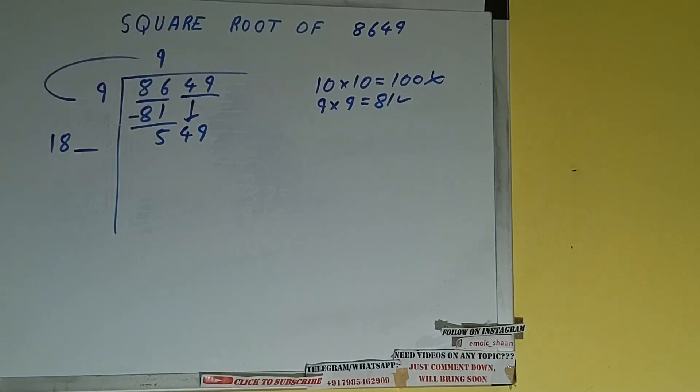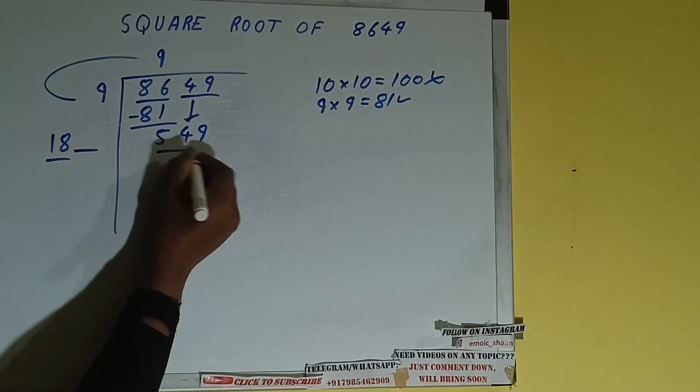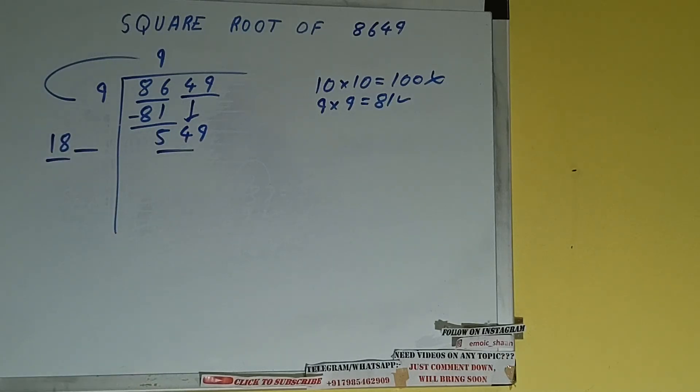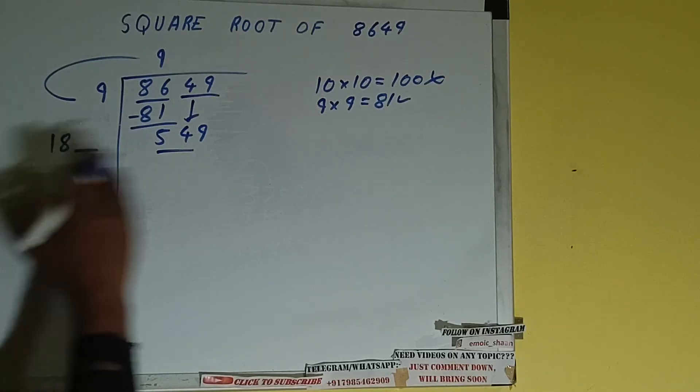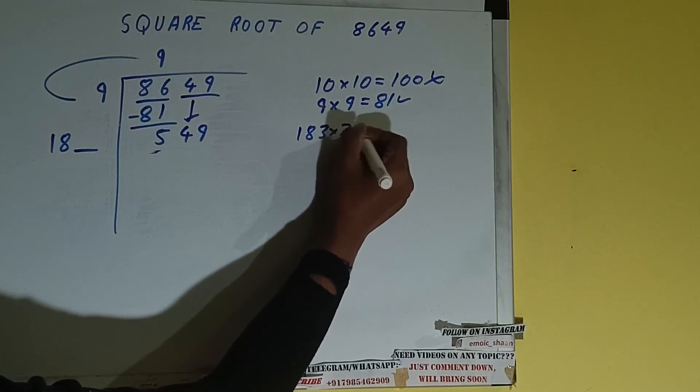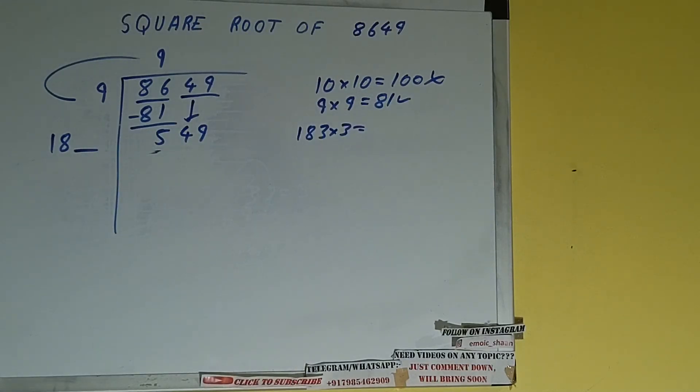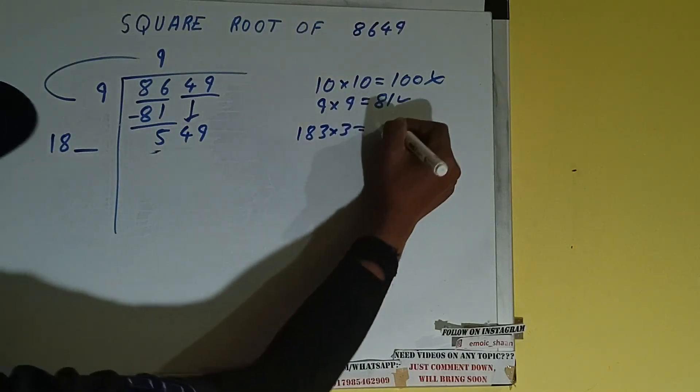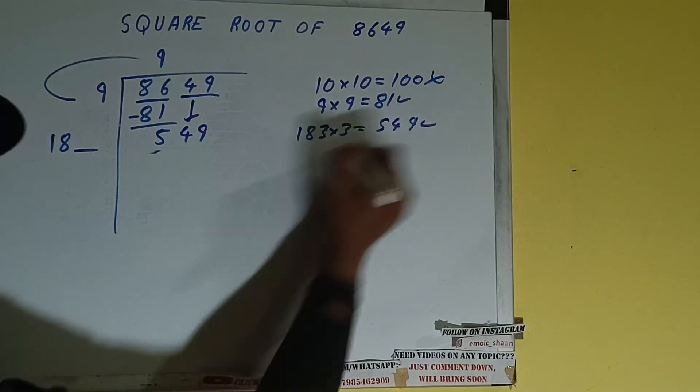So we can compare this 18 with 54. 18 times 3 is 54, right? So we can try out 3 times. 18 times 3 into 3 we can try, and it will be 549, which is good to take. So 3 here and 3 here: 549.